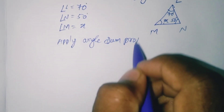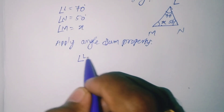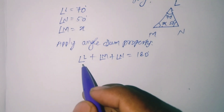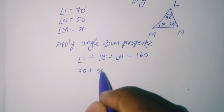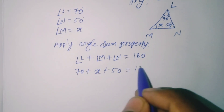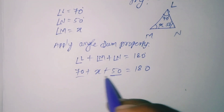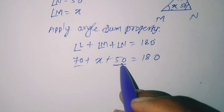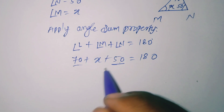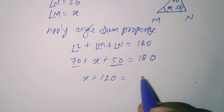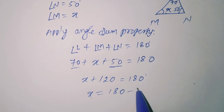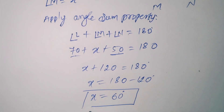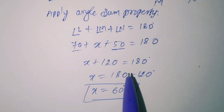Applying the angle sum property: angle L plus angle M plus angle N equals 180 degrees. Substituting, 70 plus x plus 50 equals 180. We cannot add x with the known values since x is unknown. So 70 plus 50 equals 120, giving x plus 120 equals 180, therefore x equals 180 minus 120, which is 60 degrees.